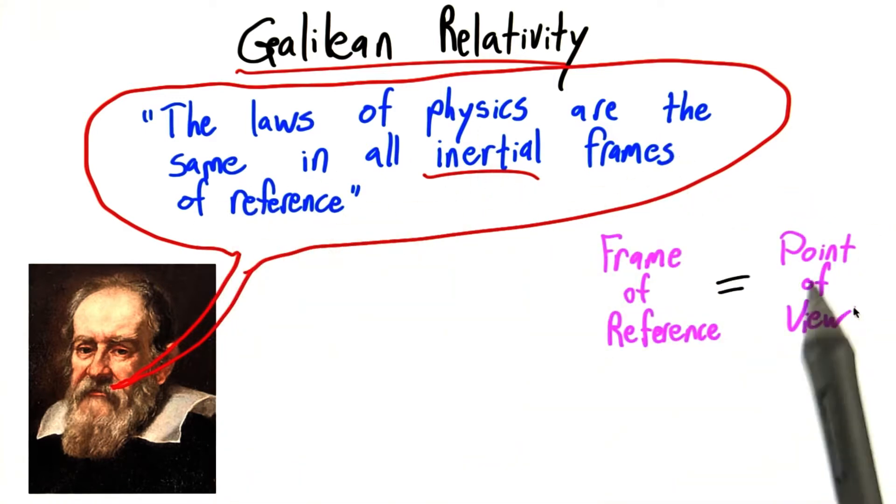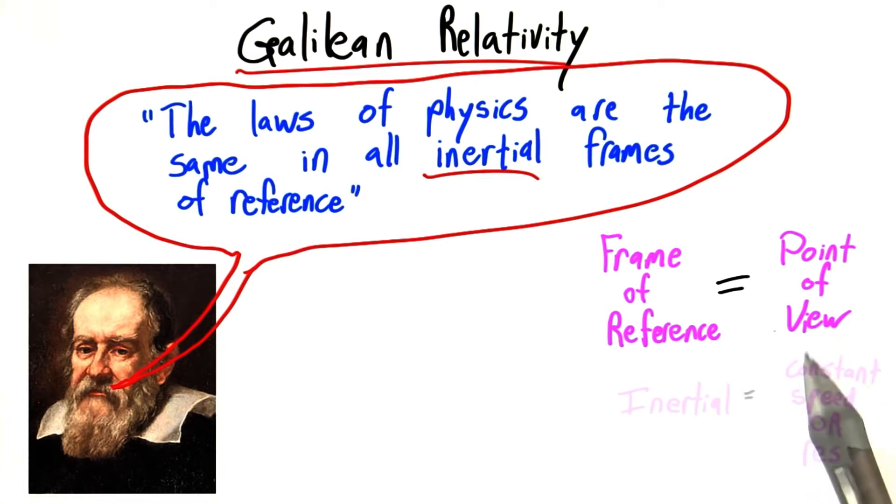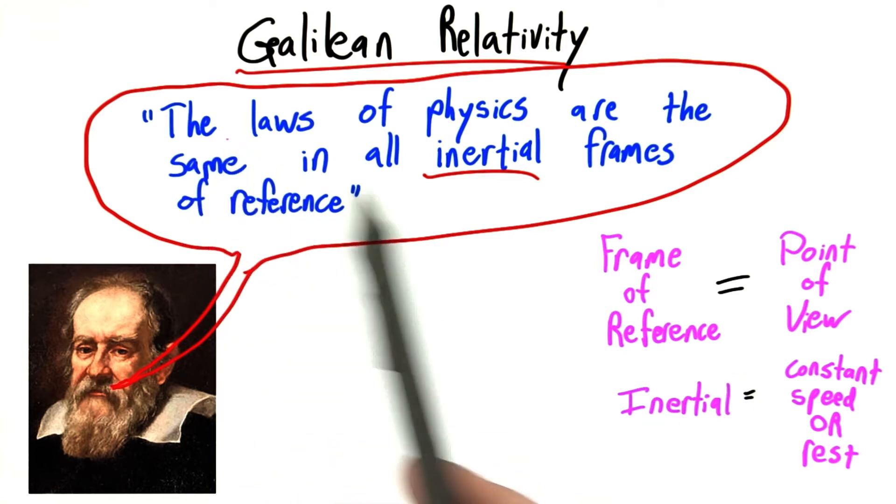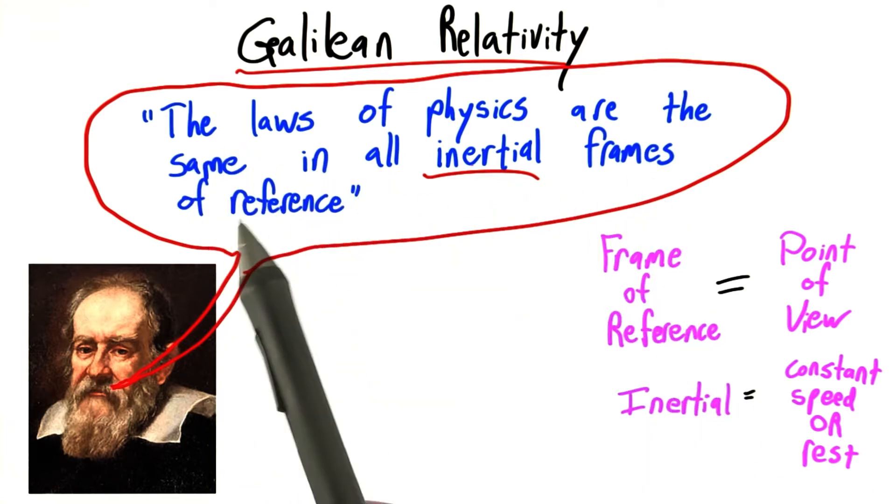But don't worry, frames of reference we can think of for now as just meaning point of view. And inertial just means moving at a constant speed or being at rest. So, what this sentence is really saying is that the laws of physics are the same in all points of view which are either moving at constant speed or at rest.